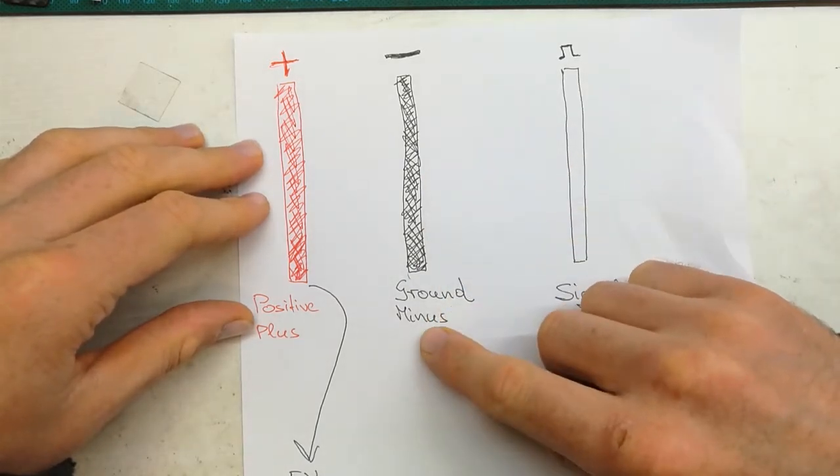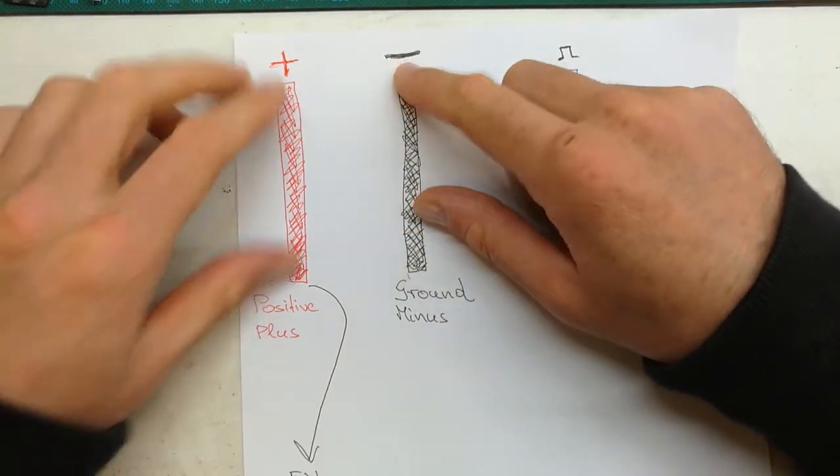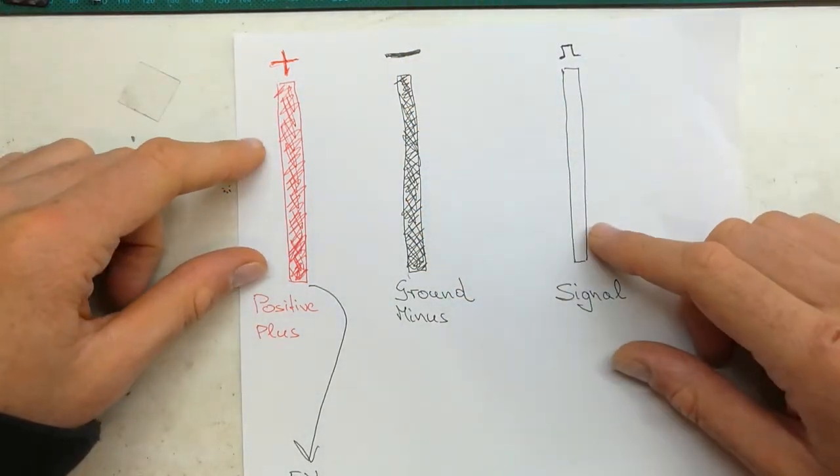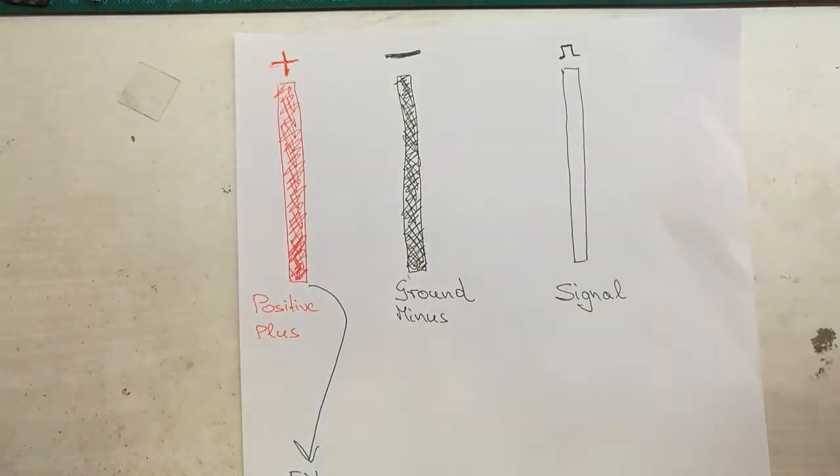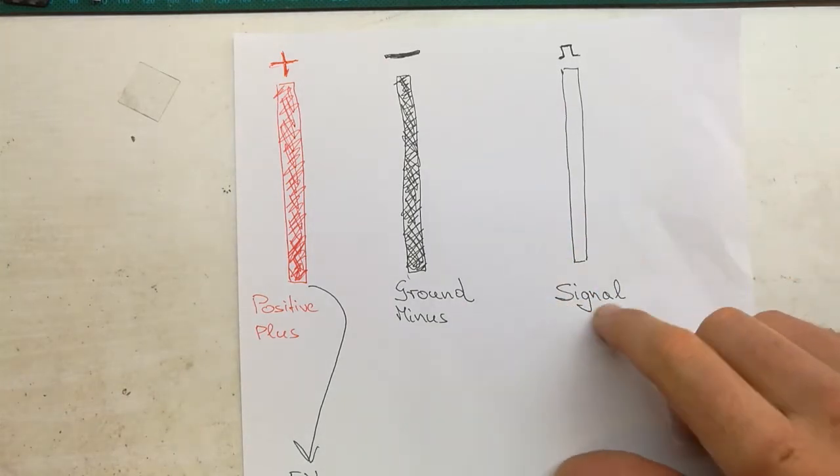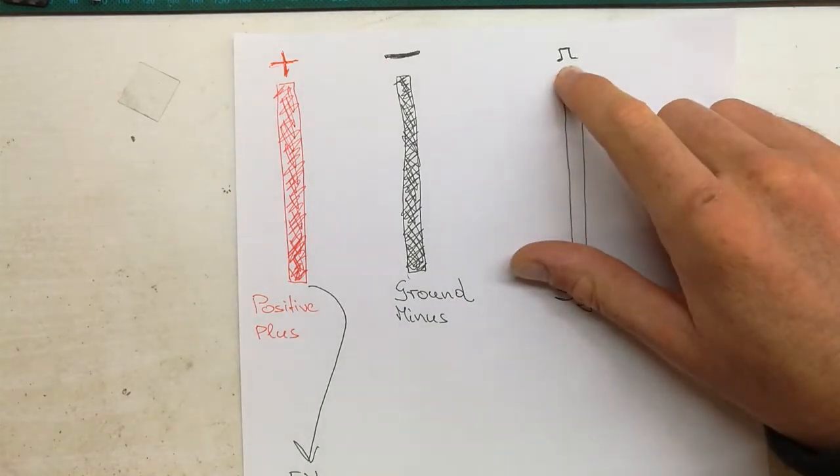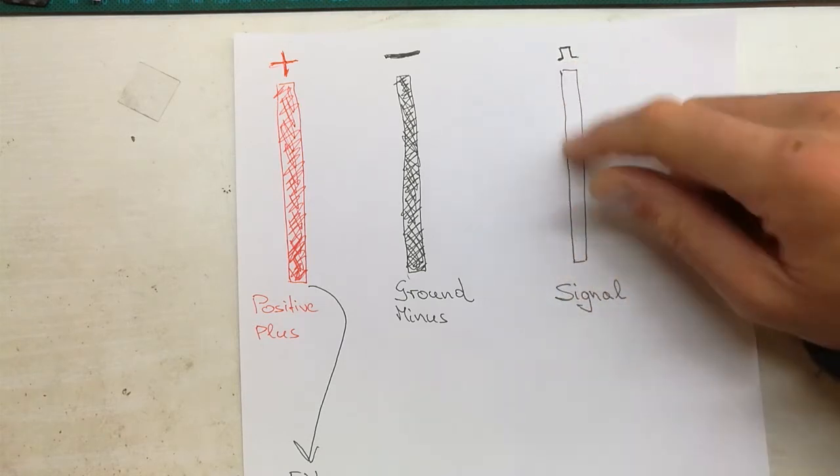The third wire is white. Normally it's white, sometimes it's a different color, but normally it's white and it means signal. This sign we can very often see on the receivers, and this sign means signal. Signal means white wire.